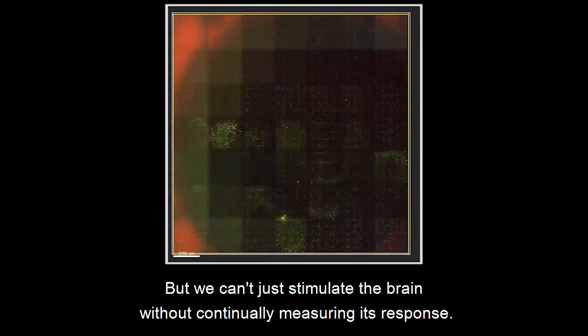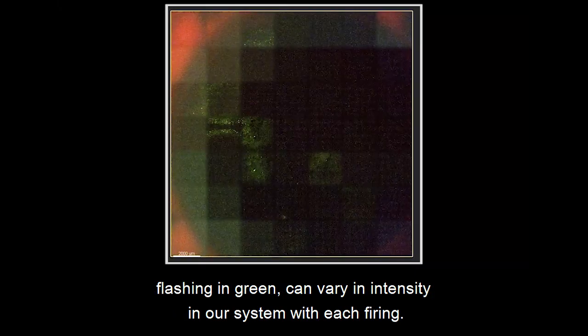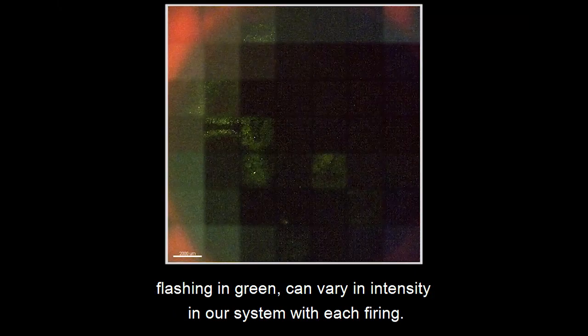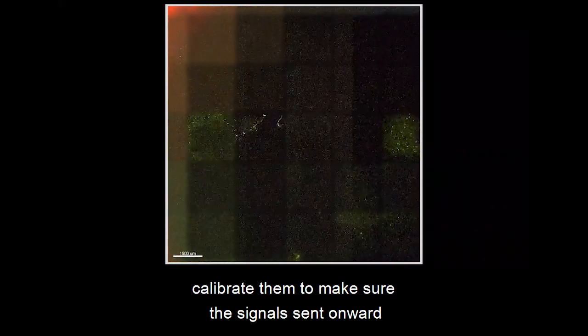But we can't just stimulate the brain without continually measuring its response. Why? The signals that the neurons send onward to the visual cortex, flashing in green, can vary in intensity in our system with each firing. We need to monitor in real time for these variations and calibrate them to make sure that the signals sent onward to the visual cortex look like real vision.